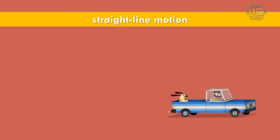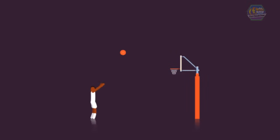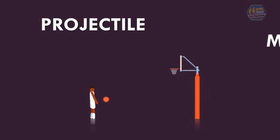But now, how about if an object experiences moving horizontally and at the same time vertically? This kind of motion is called projectile motion. In this video we will learn the concept of projectile motion.